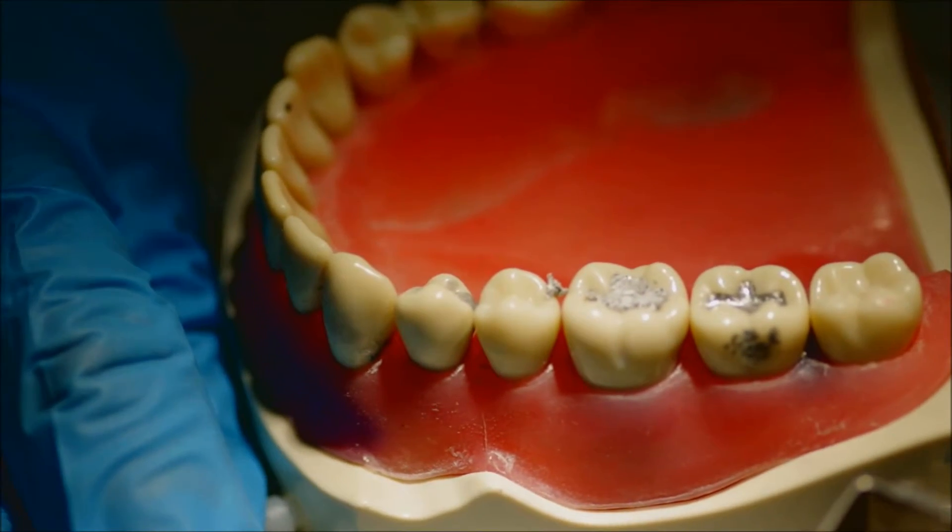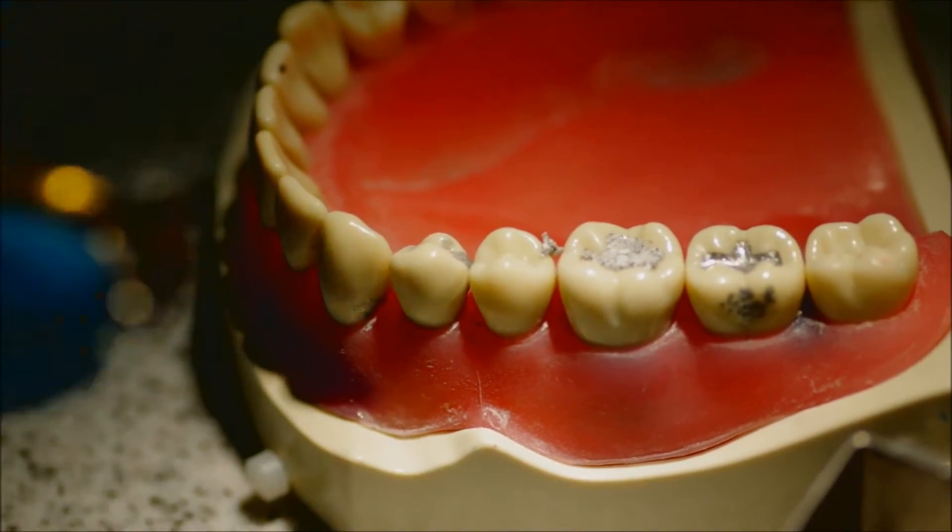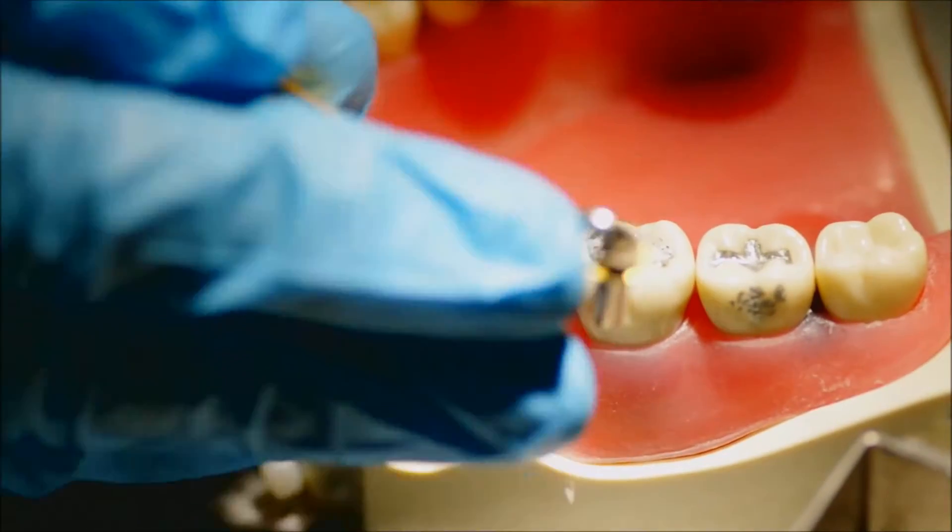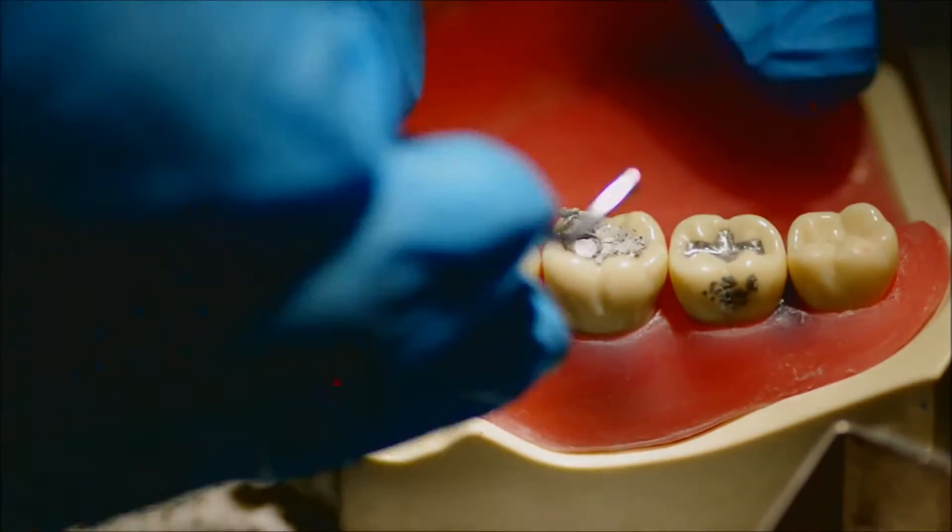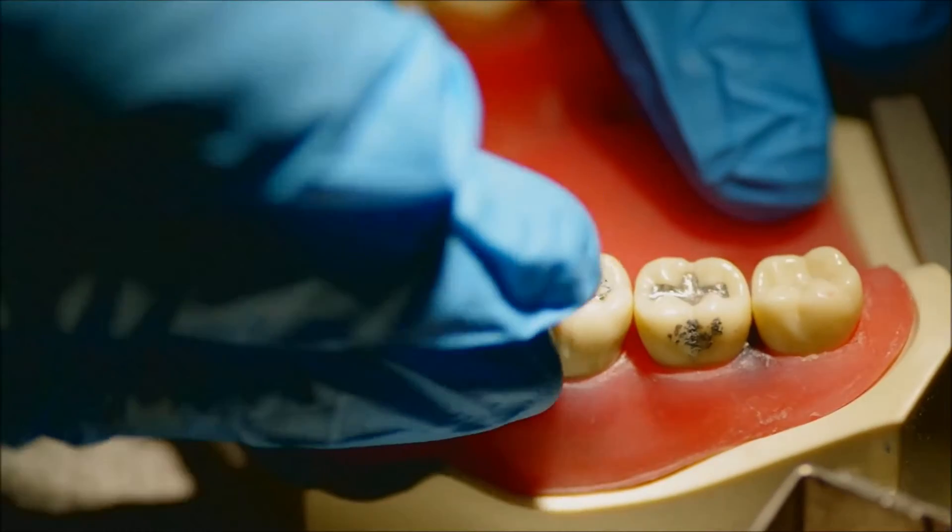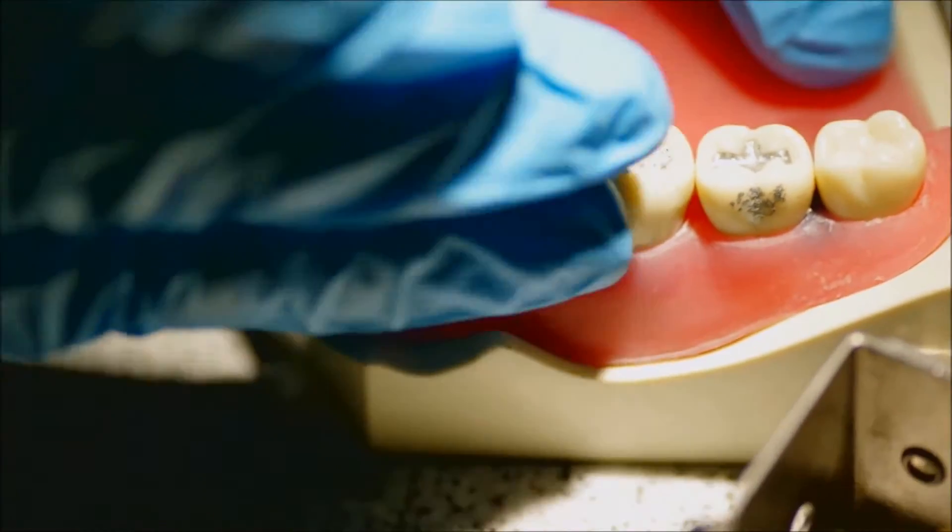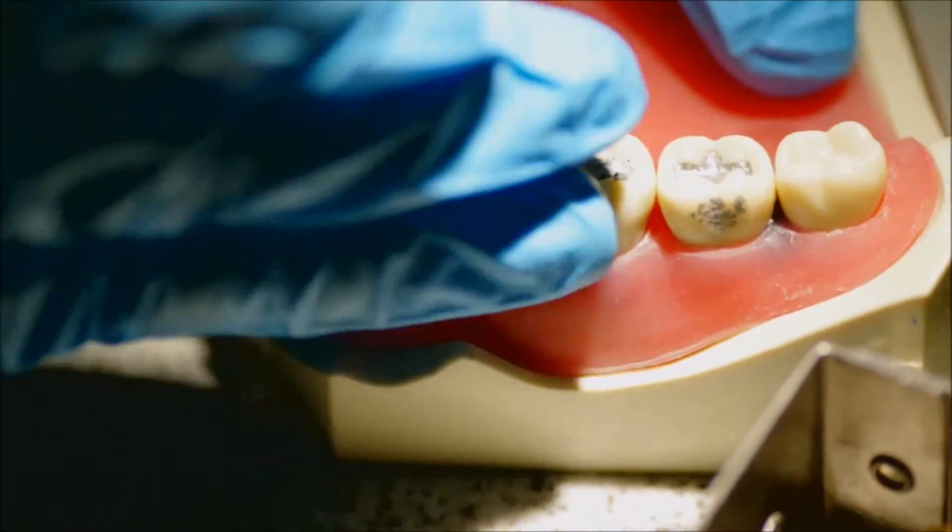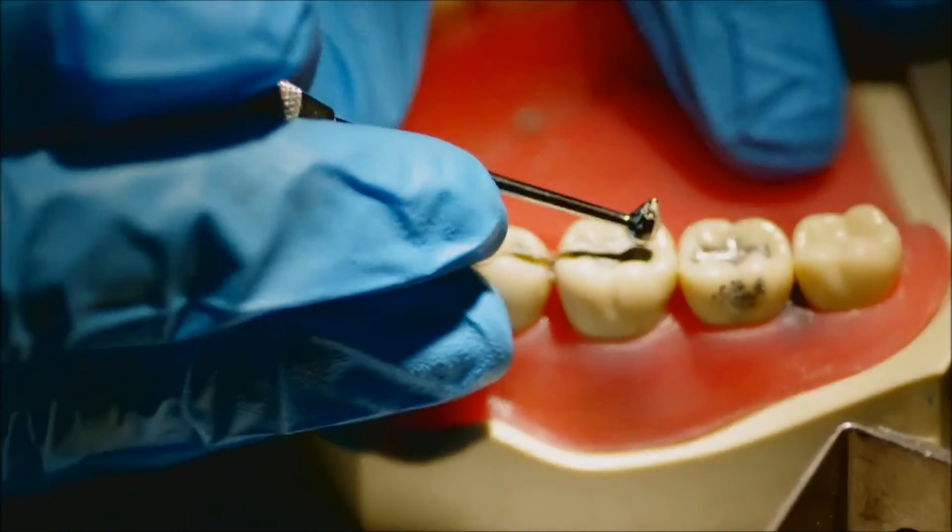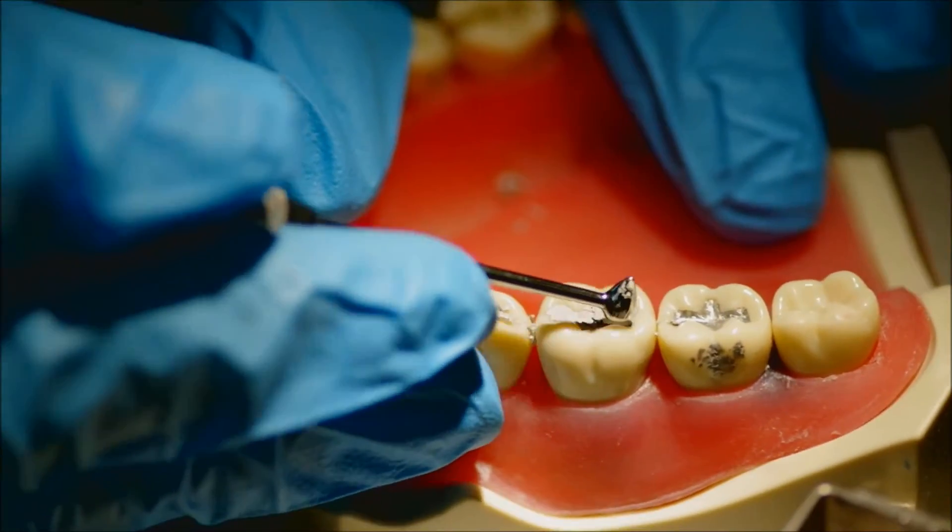At this point, you can see that the amalgam has definitely filled or overfilled my prep, and that's exactly what you need because you need more in order to carve it down to the shape that you require. So again, I put in some more, and I pressed it down with my large condenser.